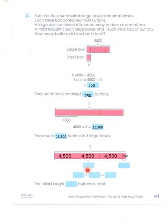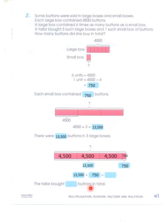The 3 large boxes had a total of 13,500 buttons, and one small box had 750 buttons. So 13,500 plus 750 equals 14,250. The tailor bought a total of 14,250 buttons.